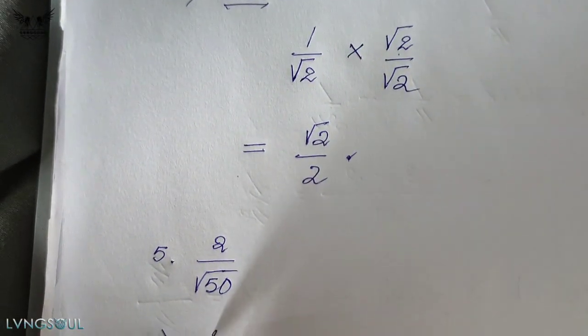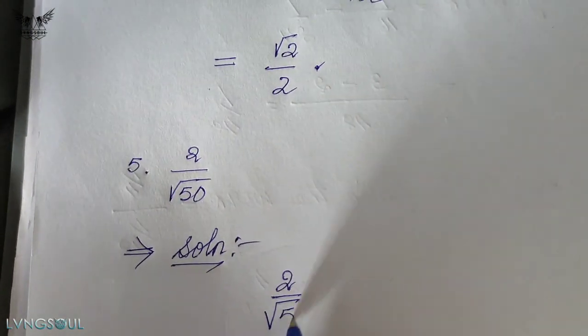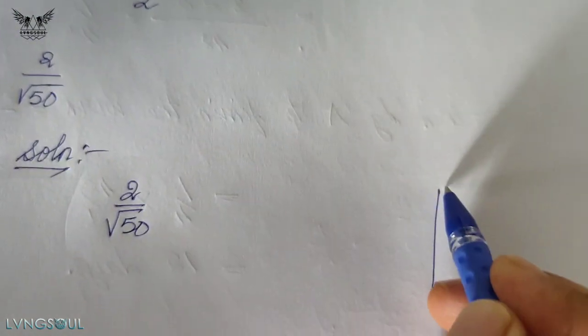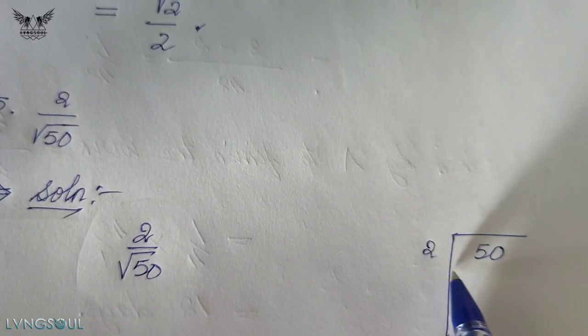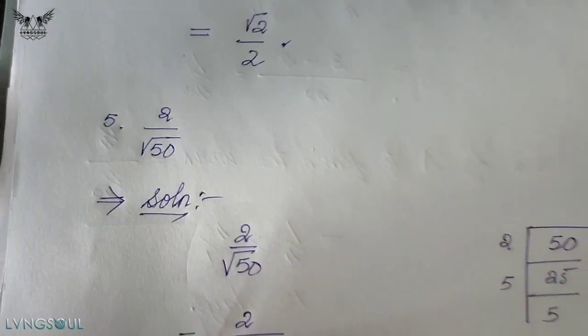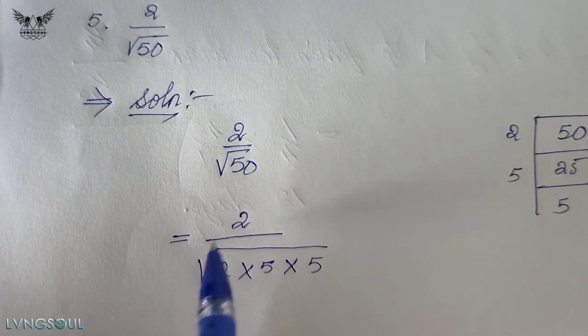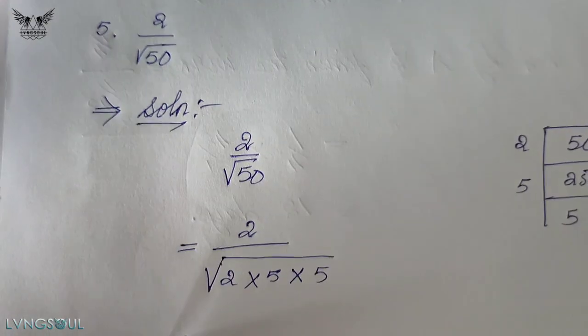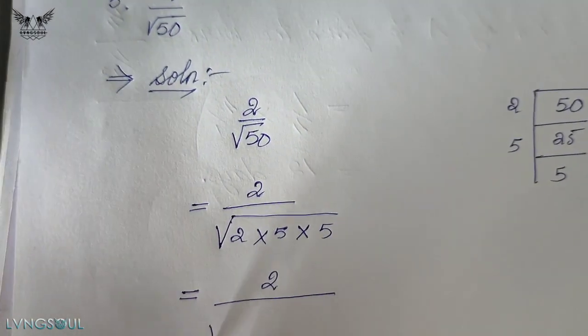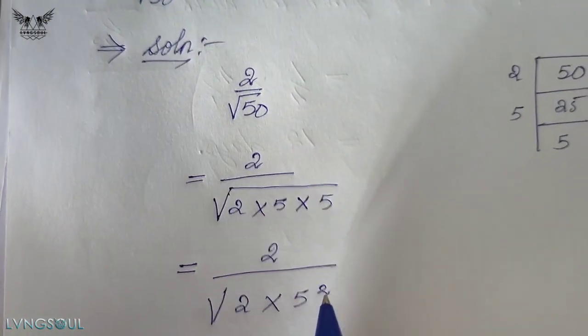Root 50 — 50 is an even number, not a prime number. To rationalize, we use prime factorization. Fifty equals two times twenty-five, and twenty-five equals five times five. So the prime factorization of 50 is two into five into five. Taking the square root, we can take out pairs of factors from under the root sign.